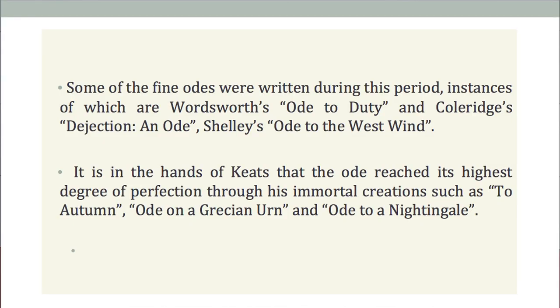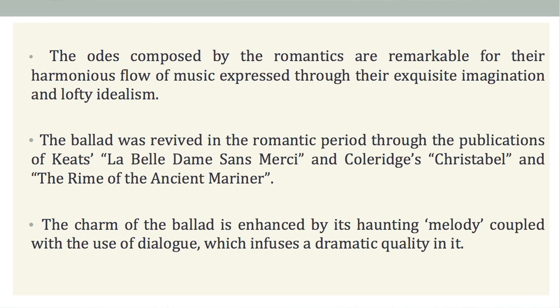Some of the finest odes were written during the period, instances of which are Wordsworth's Ode to Duty, Coleridge's Dejection: An Ode, and Shelley's Ode to the West Wind. It is in the hands of Keats that the Ode reached its highest degree of perfection, through his immortal creations such as To Autumn, Ode on a Grecian Urn, and Ode to a Nightingale.